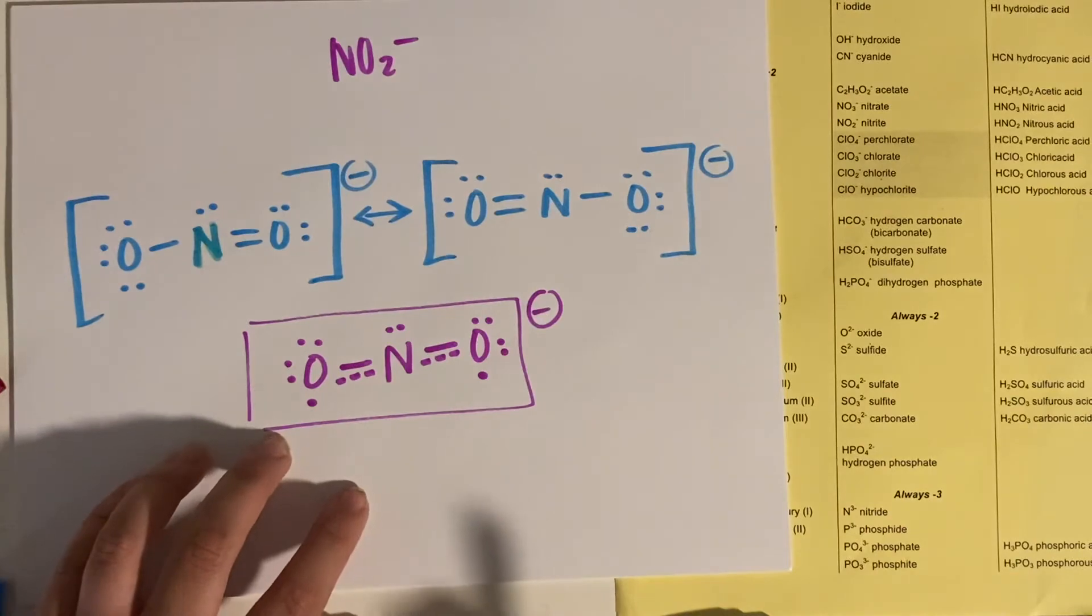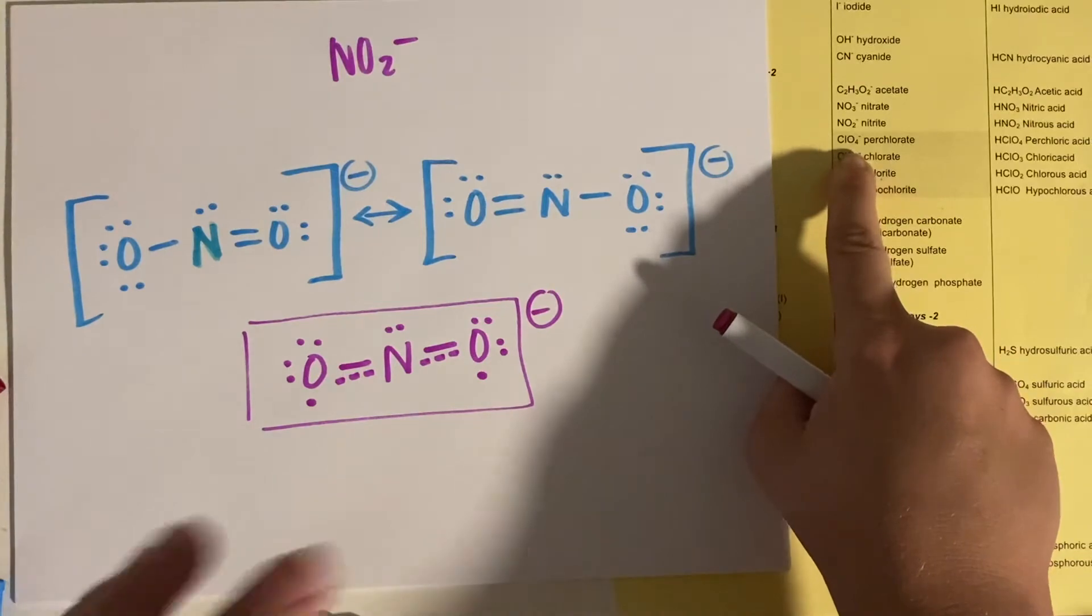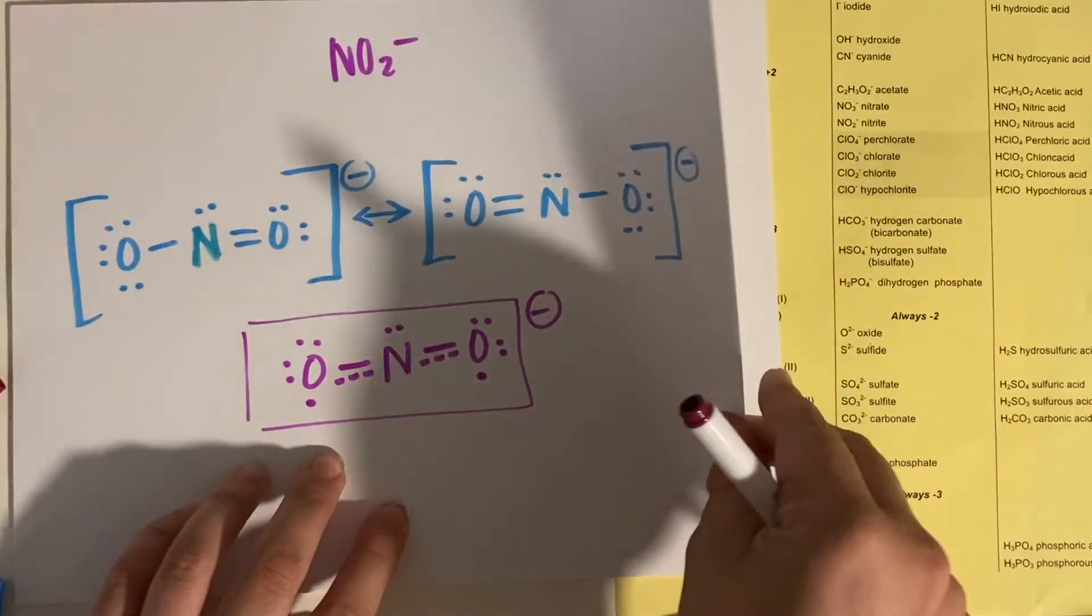And this is just for NO2 minus, nitrite. I want to show you one other option, perchlorate, because there is something different that happens with this than nitrite.